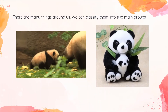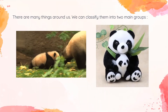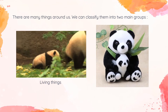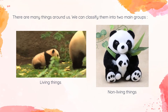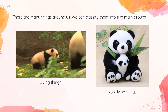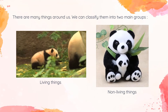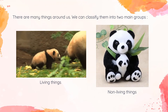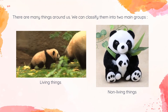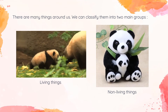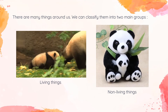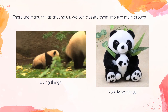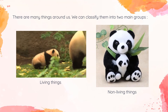There are many things around us, and we can classify them into two main groups: living things and non-living things. We know that something is a living thing when it can carry out life processes like nutrition, movement, growth, sensitivity, respiration, excretion, and reproduction. A non-living thing cannot carry out all of these life processes.